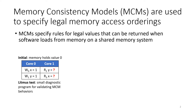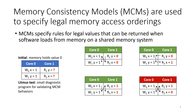Memory Consistency Models, or MCMs, specify what values can be returned when software loads from memory on a shared memory system by specifying the legal event orderings that can occur to result in such outcomes. They are defined across the hardware-software stack and play an important role in verifying correctness of implementations. MCM specification and verification efforts make use of small diagnostic programs known as litmus tests. They are used to define and verify correct behaviors. Based on the MCM specification, a litmus test outcome can be deemed permitted or forbidden by determining the legality of the event orderings required to result in the given outcome.